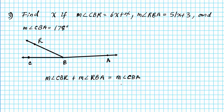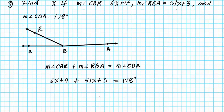This equation is based on the Angle Addition Postulate. We carry out the substitution: the measure of angle CBR is 6x plus 4, plus the measure of angle RBA is 51x plus 3, and the measure of angle CBA is 178 degrees. On the left side we combine like terms: 6x and 51x combine to 57x, and the constants 4 and 3 combine to 7, giving us 57x plus 7 equals 178.